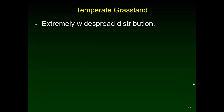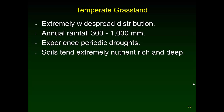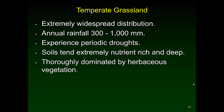Temperate grasslands have a very widespread distribution. Rainfall is higher than in the desert — deserts go up to 250 millimeters, while grasslands can receive up to a meter a year. They experience periodic droughts. The soils tend to be nutrient-rich and very deep — these are the richest soils in the world. The biome is thoroughly dominated by herbaceous vegetation such as grasses and forbs, which die back to the surface every winter.